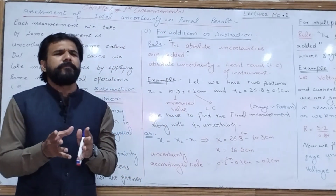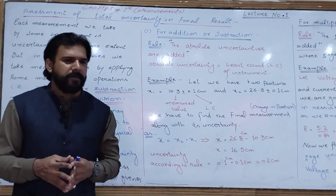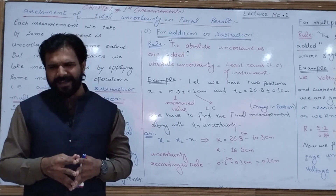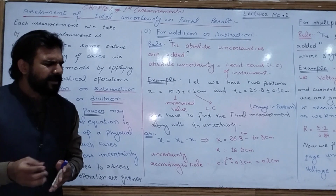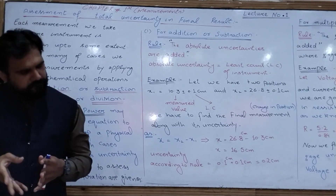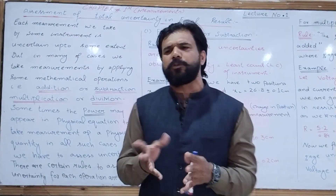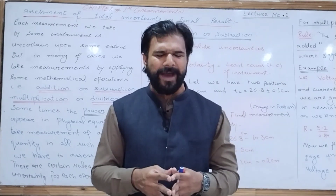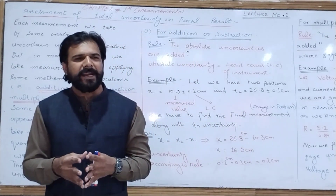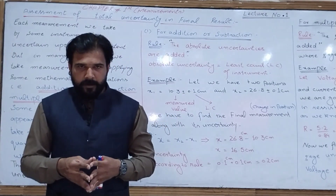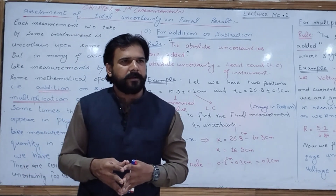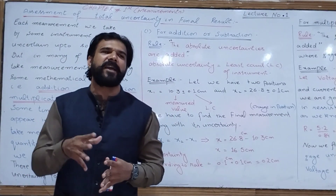Any measurement that we take is uncertain to some extent. Every measurement is uncertain by its least count. But some measurements will be taken by applying mathematical operations like division, multiplication, addition, or subtraction, and these will be used to find a final result.